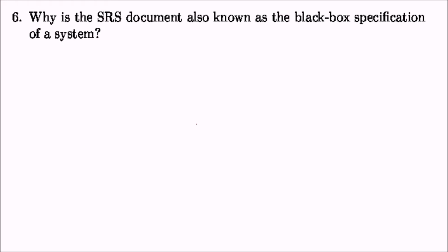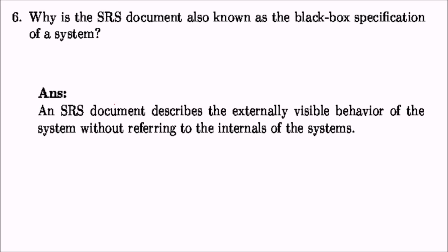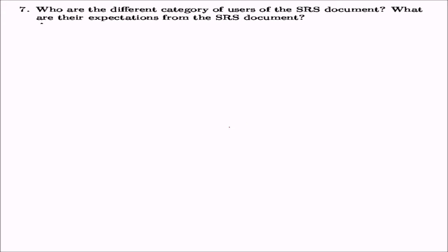That is why the SRS document is also known as the black box specification of the system. Black box specification means you are not going to show how you are going to make it, but you describe what you are going to make. The SRS document describes the externally visible behavior of the system without referring to the internals. It gives functional requirements, non-functional requirements, constraints, and traceability metrics.